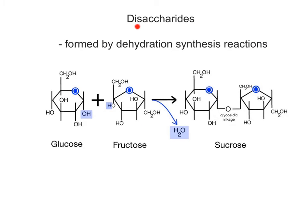Disaccharides, meaning two sugars, are simple sugars formed by covalently bonding together two monosaccharides in a dehydration synthesis reaction with the loss of one water molecule. For example, the disaccharide sucrose, or table sugar, is formed by joining together the monosaccharides glucose and fructose. The covalent bond that forms between the two monosaccharides is called a glycosidic linkage, formed from the hydroxyl group in glucose and the hydrogen atom in fructose.